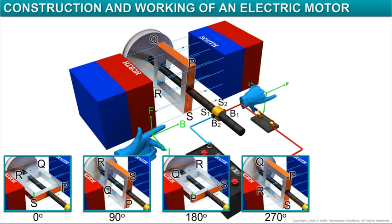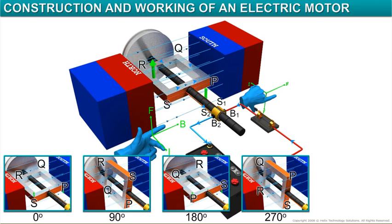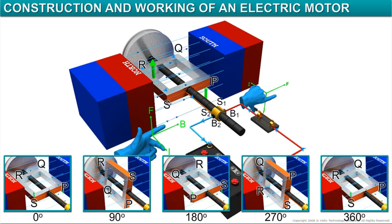A torque acts on the coil whenever the split rings are in contact with either of the brushes. The torque is maximum when the plane of the coil is parallel to the magnetic field and is zero when it is perpendicular. On completing one full rotation,